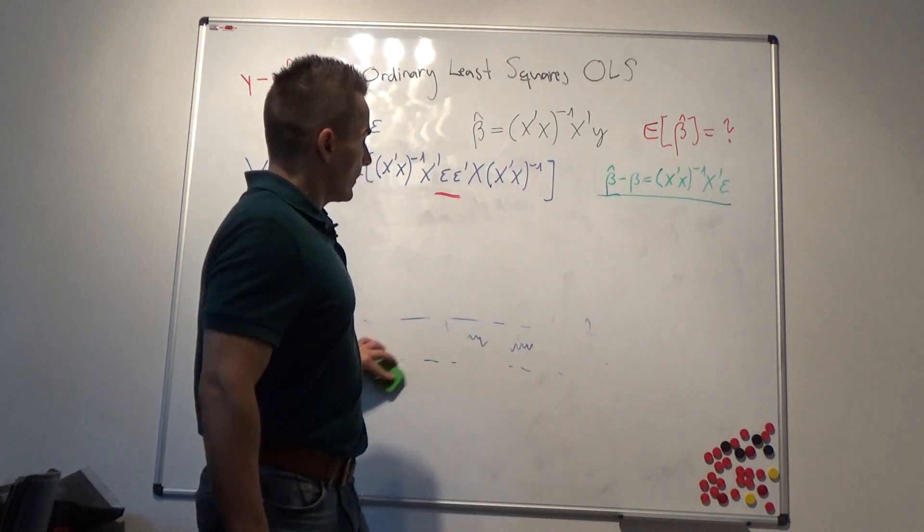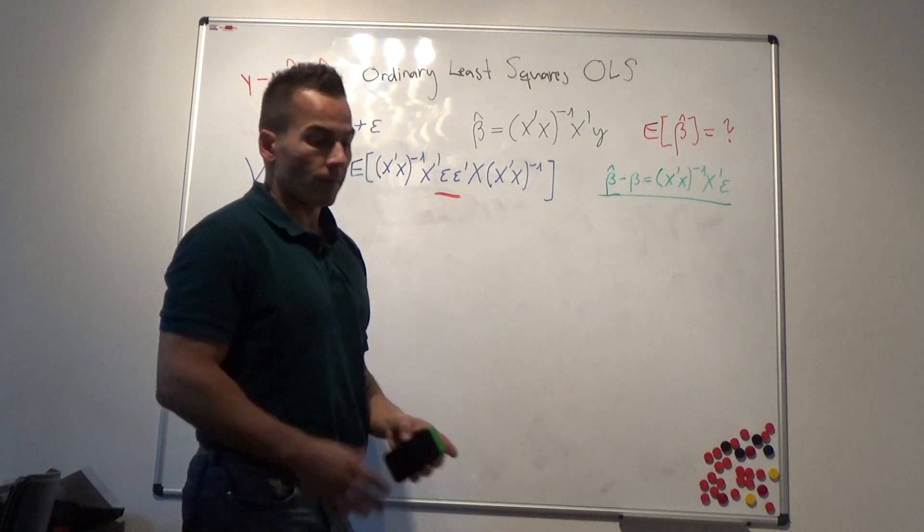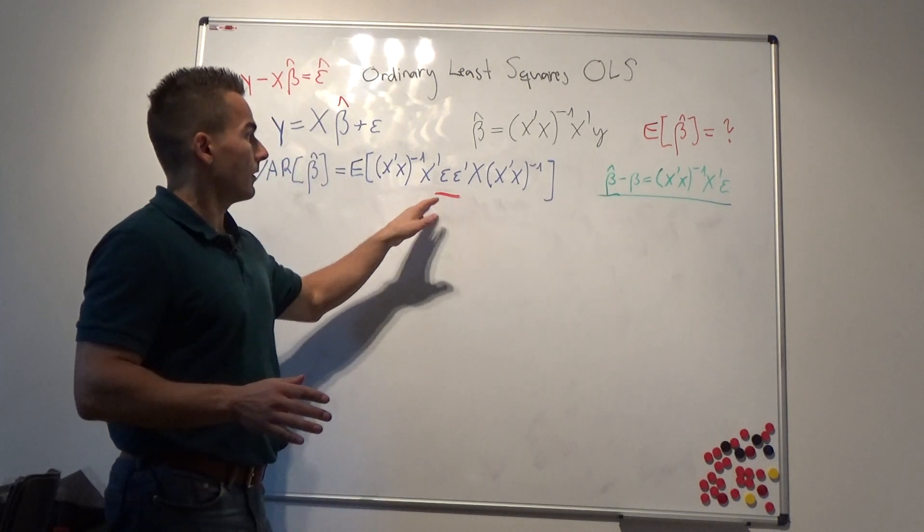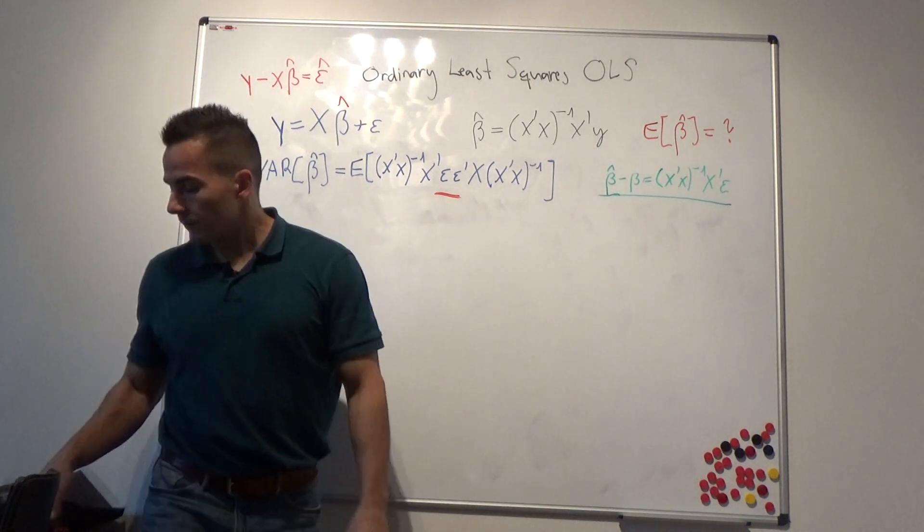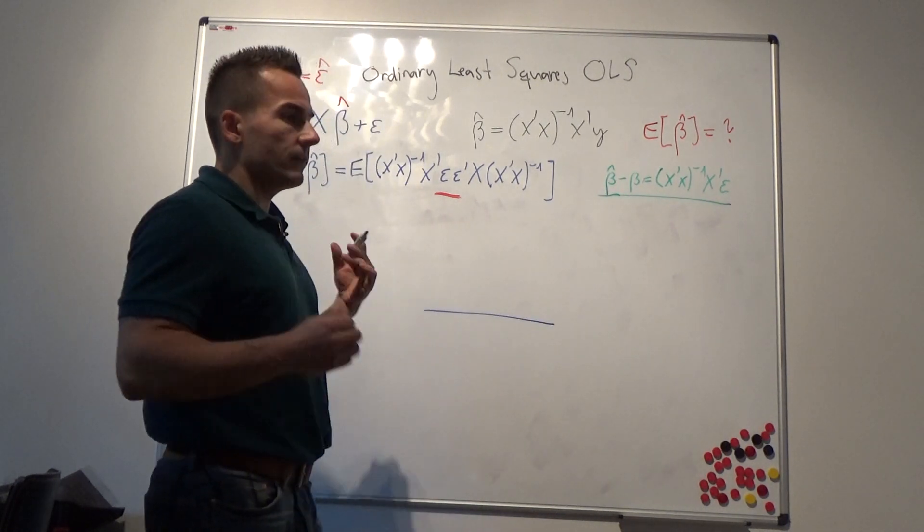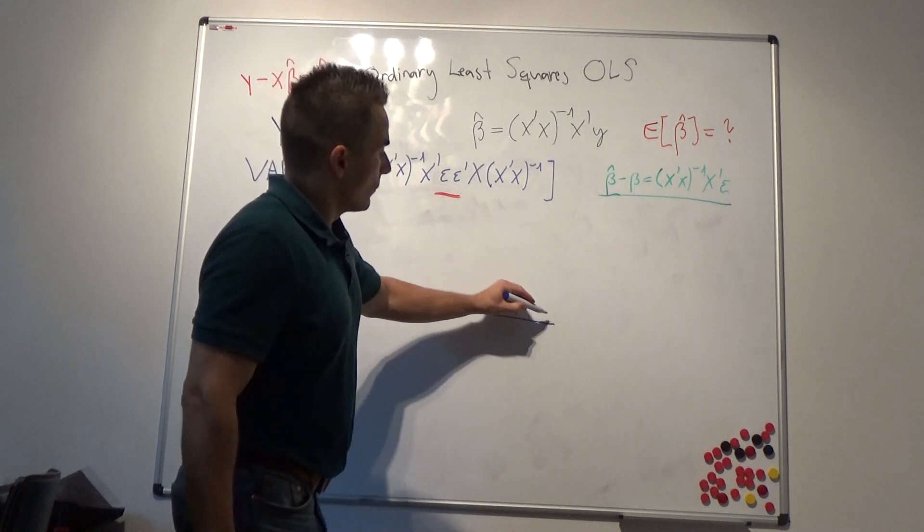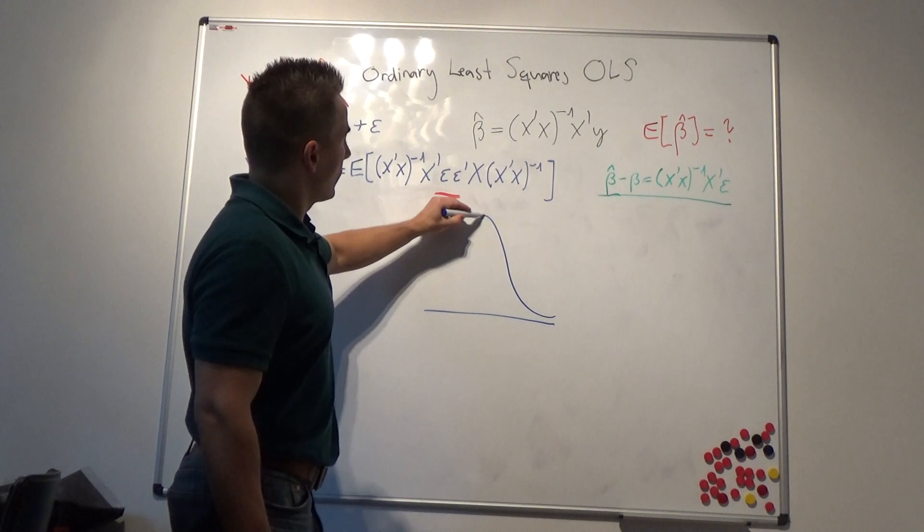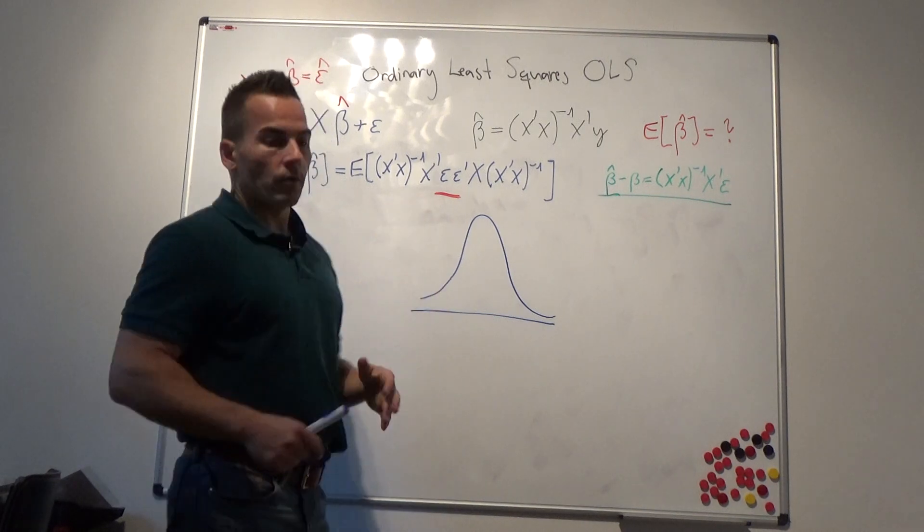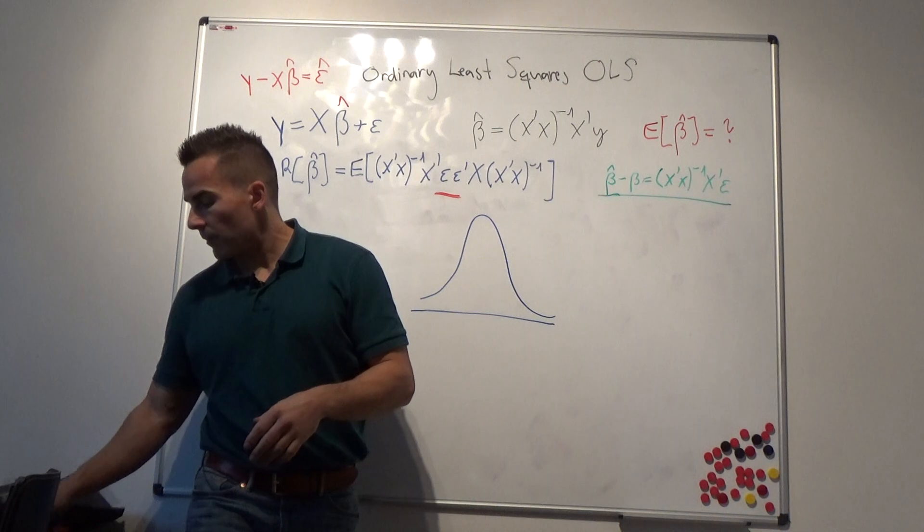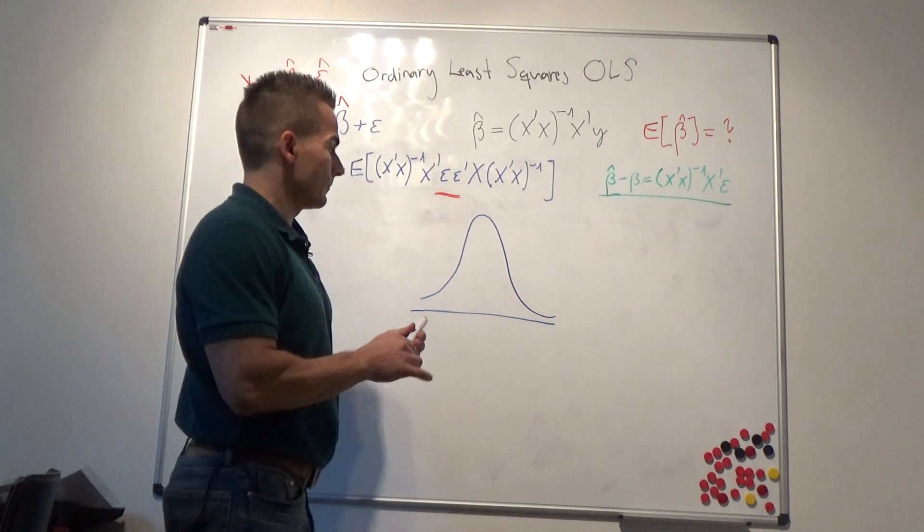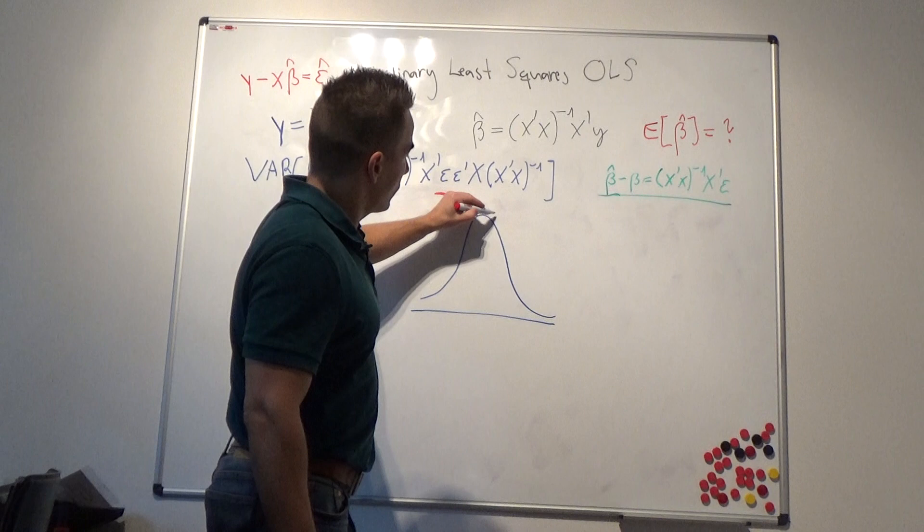So for instance, there are papers who argue that if you take daily stock returns, so if you have the normal distribution which looks a little bit like this bell-shaped curve, there are research papers that argue that daily stock returns follow a t-distribution with three degrees of freedom.